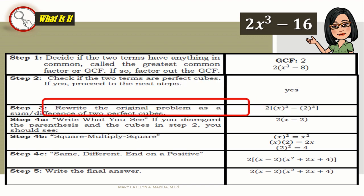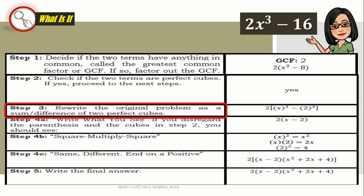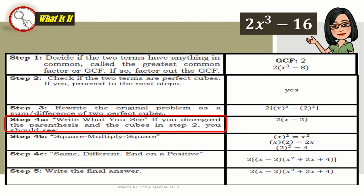Step number three: rewrite the original problem as the sum or difference of two cubes. This time, it is a difference. All right. Step four A: write what you see. So, again, we disregard the parenthesis and the cube, parenthesis and the cube. So, we have two times the quantity of x minus 2. There you have it.